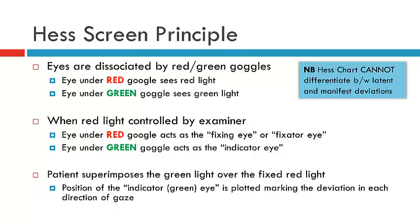The patient needs to be wearing red-green goggles so that one eye sees the light from one torch and the other eye sees the light from the other. The eye under the red goggle will see the red light and the eye under the green goggle will see the green light. When the red light is controlled by the examiner — the gold standard — the eye under the red goggle acts as the fixing eye, and you'll be measuring the deviation of the eye under the green goggle, which is considered the indicator eye. The patient is asked to superimpose the green light over the red light, giving you the size of the deviation.